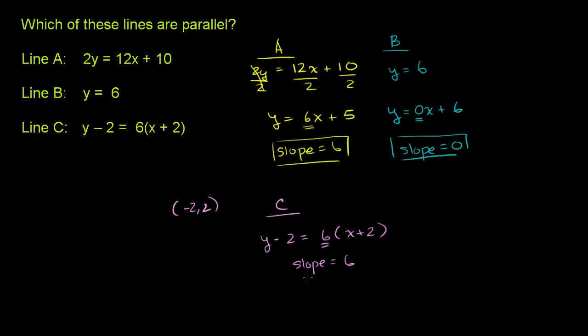And sometimes people are more comfortable with slope-intercept form. So let's put it in slope-intercept form, just to confirm that if we put it in this form, the slope will still be equal to 6. So if we distribute this 6, we get y minus 2 is equal to 6 times x, 6x plus 6 times 2 is 12. And then if you add this 2, if you add 2 to both sides of the equation,